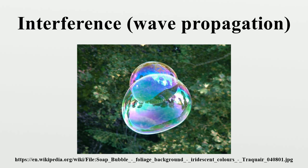Acoustic interferometry: An acoustic interferometer is an instrument for measuring the physical characteristics of sound waves in a gas or liquid. It may be used to measure velocity, wavelength, absorption, or impedance. A vibrating crystal creates the ultrasonic waves that are radiated into the medium. The waves strike a reflector placed parallel to the crystal, are then reflected back to the source, and measured.